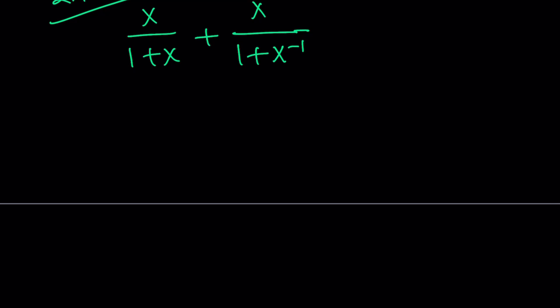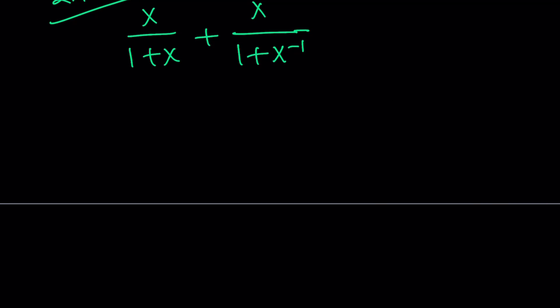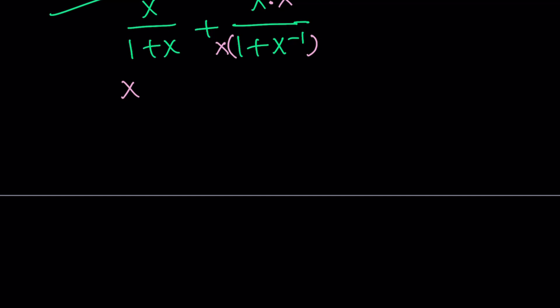So now, instead of making a common denominator, which is, you know, easy to do, I'm going to multiply the numerator and denominator by x. So I'm going to go ahead and multiply this by x and multiply this by x. It's pretty much equivalent to making a common denominator. Maybe it's a little easier. So this gives us x over 1 plus x plus x squared over.